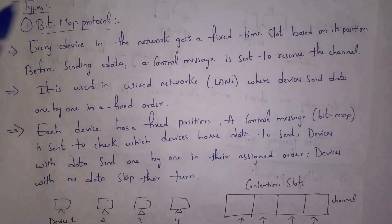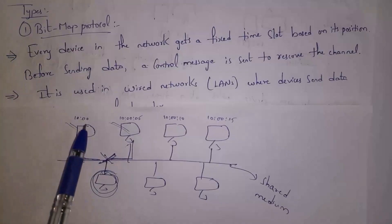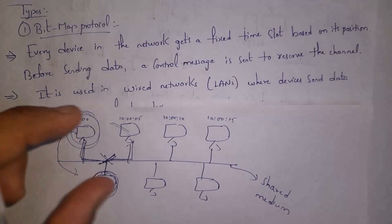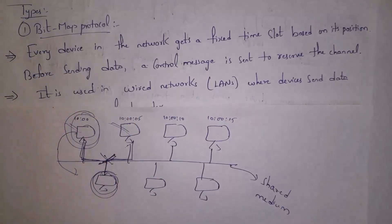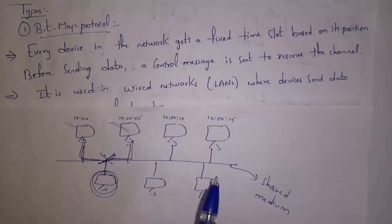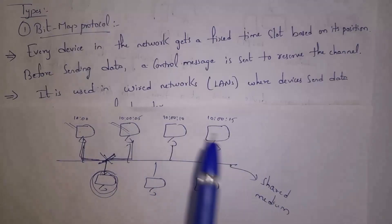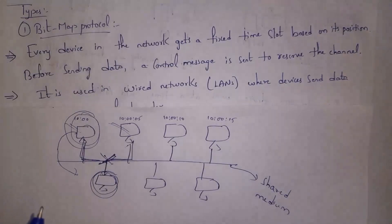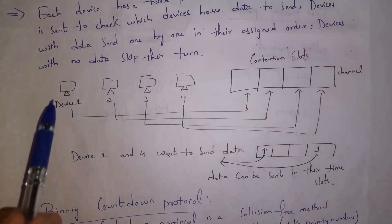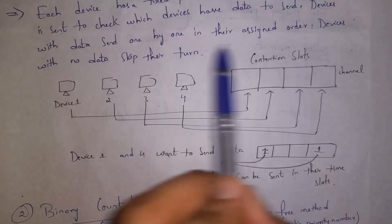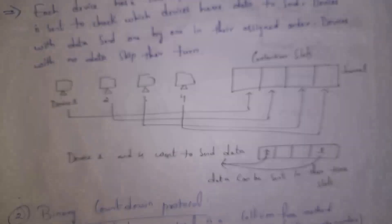Collision free protocols are classified into three types. The first is the bitmap protocol. In a shared network, whenever multiple computers send data at the same time, collision occurs. To overcome this, bitmap protocol gives a particular time slot to each and every device — a device can only communicate in that time slot. For example, one computer gets 10:00, another 10:05, another 10:10, another 10:15. The channel is nothing but the single cable.